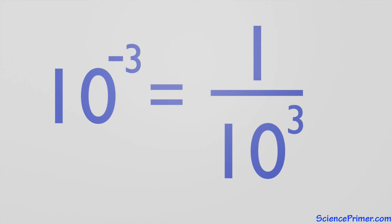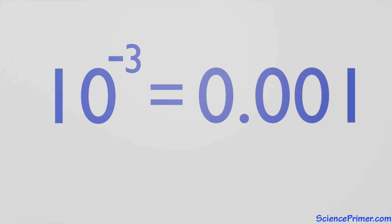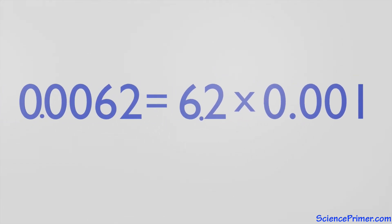Combining these two points means that 10 to the negative 3 is equal to 1 over 1,000, which is equal to 0.001. And finally, 6.2 times 0.001 is equal to the original value 0.0062.